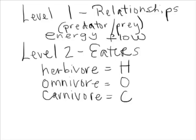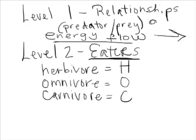So let's do a recap and move forward. Level one is all about energy flow — looking at which way the arrow is going, with the arrow pointing to the thing that gets the energy, showing those predator-prey relationships as an energy source. In level two, we're going to move forward and categorize organisms by the energy they receive, thinking of them as eaters, and thinking of the arrow as something going into the mouth of something else.